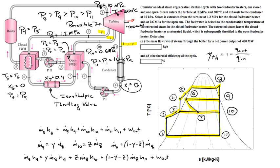Here's the energy balance around the turbine with values substituted in — written in terms of mass fractions being pulled off through the three streams. If you can find H8, H9, H10, and H11, and you're given the work out, then if you know the fractions Y and Z, you can solve for what you really want for part A, which is M_dot_8.